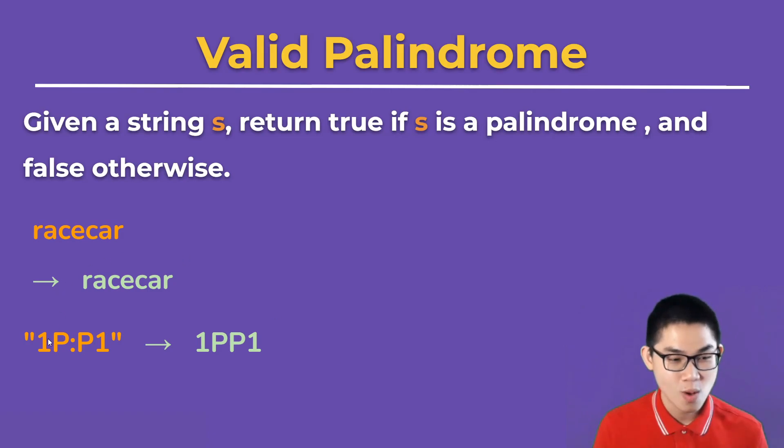How about the string 1p colon p1? First, you need to get rid of all non-alphabet characters, so in this case the colon. Once we get rid of the colon, we reverse the string, which is 1pp1, and this is also a palindrome. Keep in mind that in this problem, you are allowed to keep numbers.